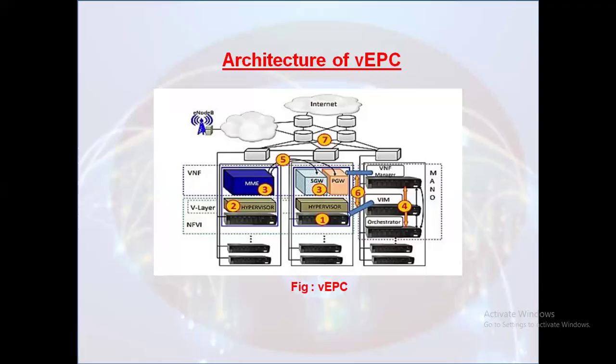Next, we'll see NFV Infrastructure, that we are calling NFVI. NFVI provides the underlying infrastructure for Virtualized Evolved Packet Core deployment, comprising computing, storage, and network resources. NFVI enables the creation of scalable and flexible infrastructure, allowing network operators to dynamically allocate resources based on changing network demand. NFVI includes virtualization technologies such as hypervisors, containerization, and Software-Defined Networking, that we are calling SDN, ensuring efficient resource utilization and optimized network performance.